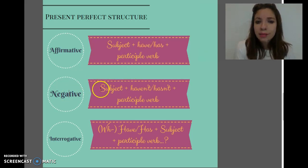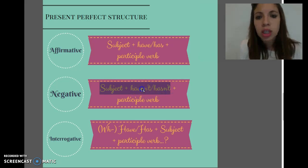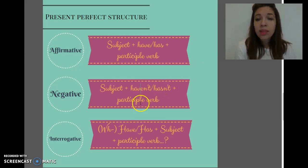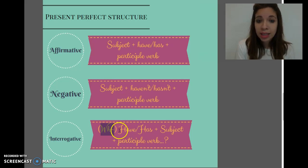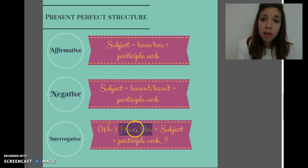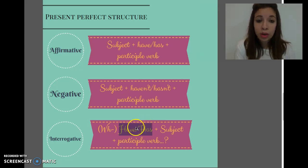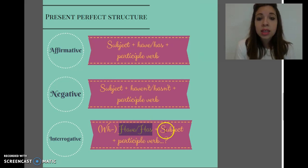The negative is similar to the affirmative — you only have to change to "haven't" or "hasn't", and then put the past participle. For the interrogative, remember you always put a WH word first if there is one, then "have" or "has" depending on whether the subject is third person singular or not, followed by the subject and the past participle.